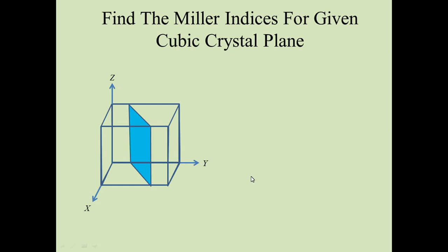Next, we are given a crystallographic plane and we have to find the Miller indices. Observing this plane, we can see it has a clear intercept along the y-axis and no intercept along the z-axis since it is parallel to the z-axis. It is not parallel to the x-axis, so there must be an intercept along the x-axis. The given information: this distance is 1/3 of this edge and this distance is 3/4 of this edge, so the remaining distance is 1/4, and this remaining distance is 2/3.